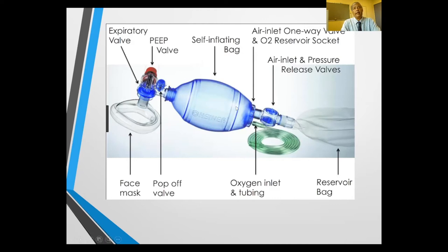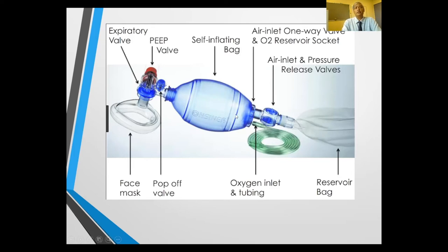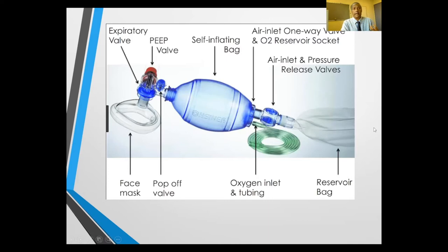It's called self-inflating because as soon as you release pressure, the bag inflates itself. The adult bag holds approximately 1.5 liters of volume, so be careful — by vigorously pushing the bag you can deliver up to 1.5 liters of gas into the patient, which can be damaging to the lungs. There is a 2.5-liter reservoir bag attached to the system with an oxygen connection and release valves. It's primarily used in resuscitation.